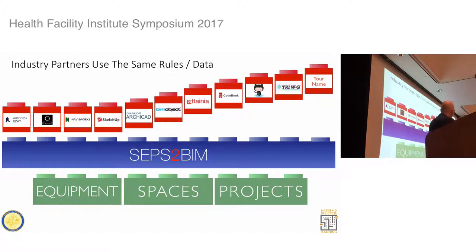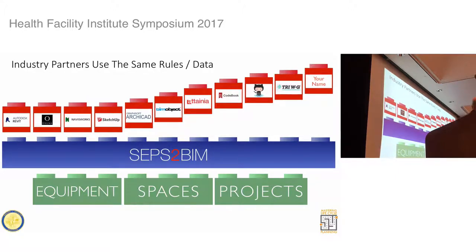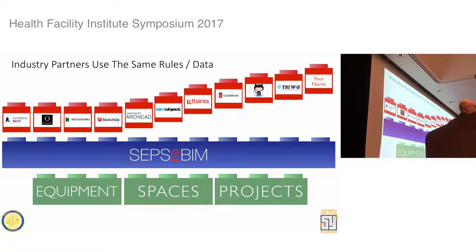This is actually happening and it's real. It started with Revit, then SketchUp, Navisworks, ArchiCAD, MObject, Atania. Atania saw data from SEPS and linked their equipment data to that. We're having ongoing conversations about next steps. The open source community is building on top of that too. We have TryWG coming, and we want more names — other consultants, architects, vendors, and app developers to help plug into this and build this capability up.